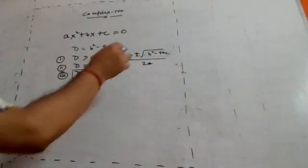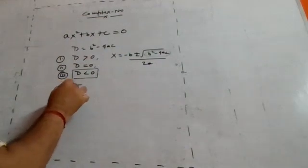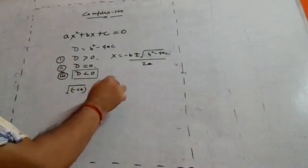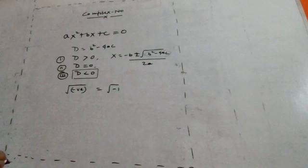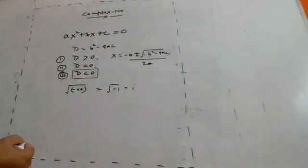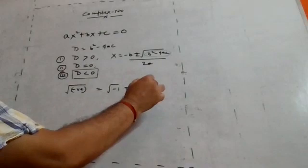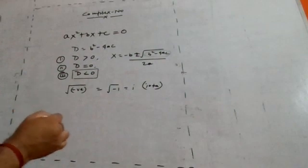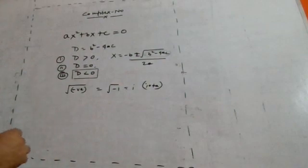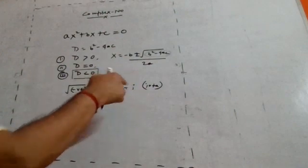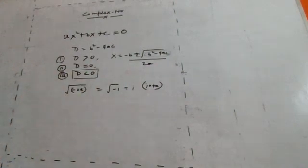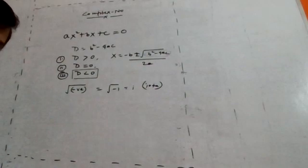When D is less than zero, the root of a negative number is not real. The square root of a negative number — let's take minus one — is assumed to be a new value called iota, written as i. The British mathematician introduced i, where i stands for imaginary number. So the square root of minus one is equal to i.